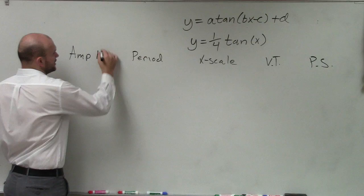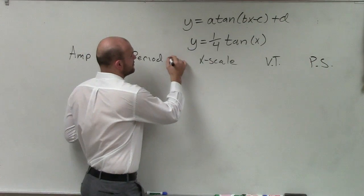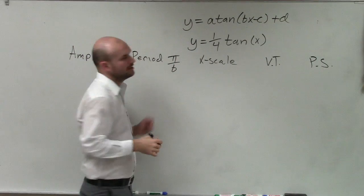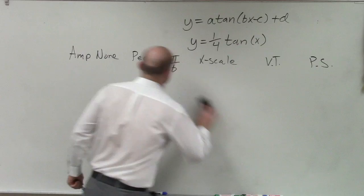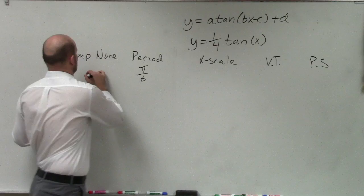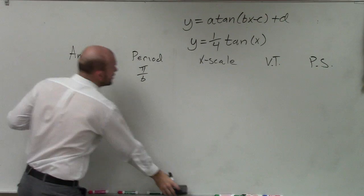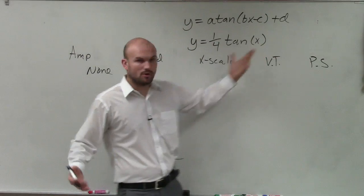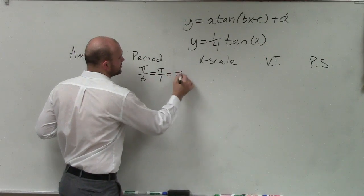Period, we love that one. That does not exist. The period is going to be π divided by b. Well, here my coefficient, actually let me do this below. My period in this case is π divided by b. Well, you can see that my coefficient of my x is 1, so it's just going to be π divided by 1, which is just equal to π.